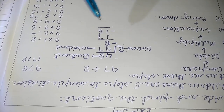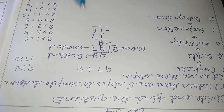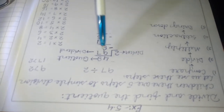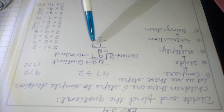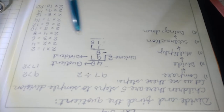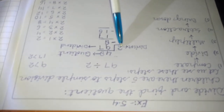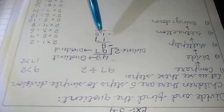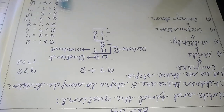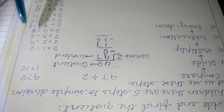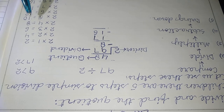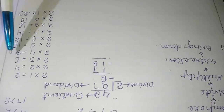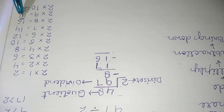After bringing down the digit, we repeat steps 1 to 5 again until there are no more digits to bring down. We have divided 9 first, then brought down 7, making 17. Now we compare 17 and 2: since 17 is greater than 2, we can divide 17 by 2. Using the table of 2, we find the nearest product to 17.